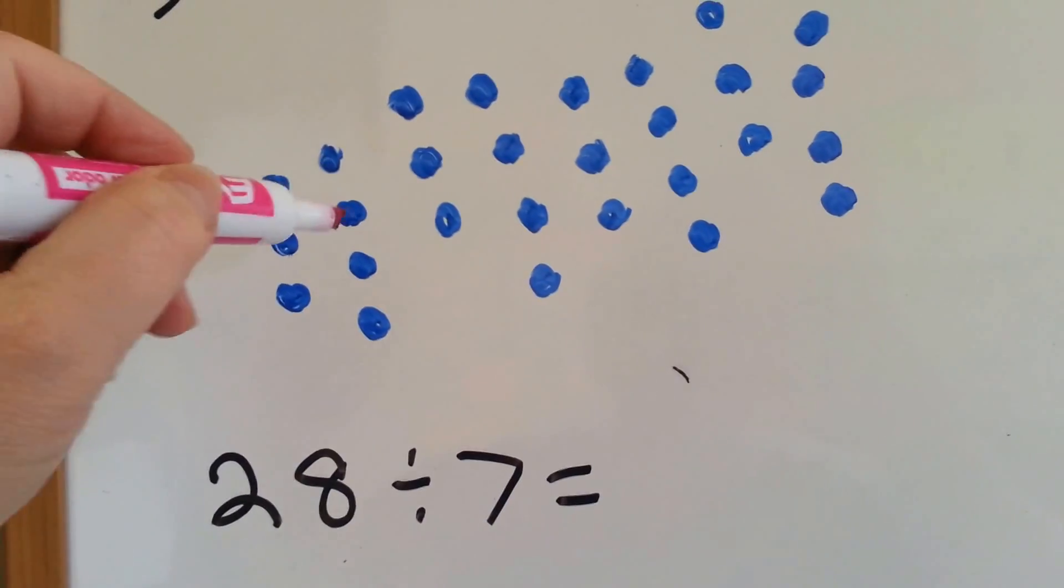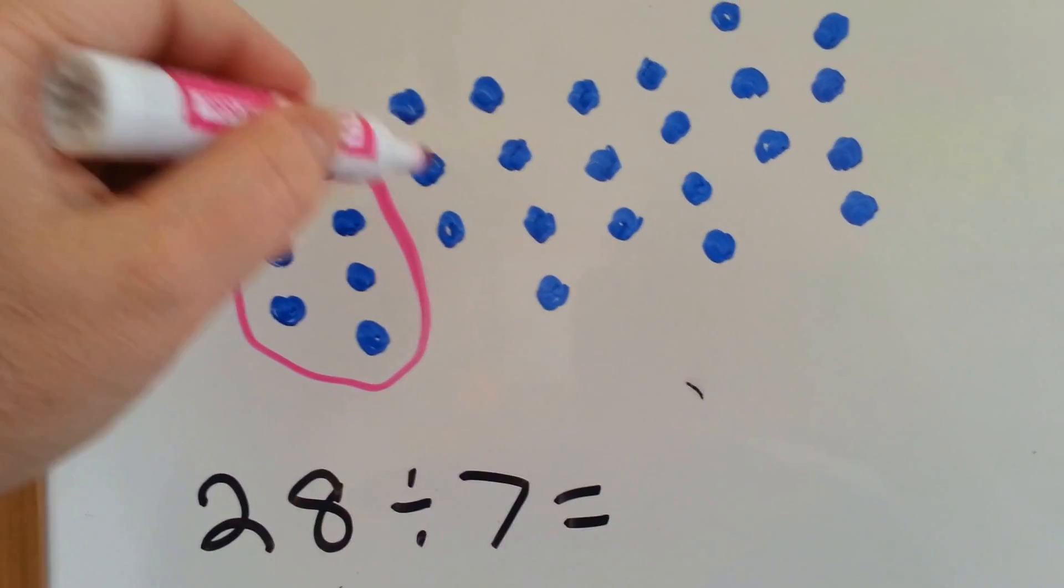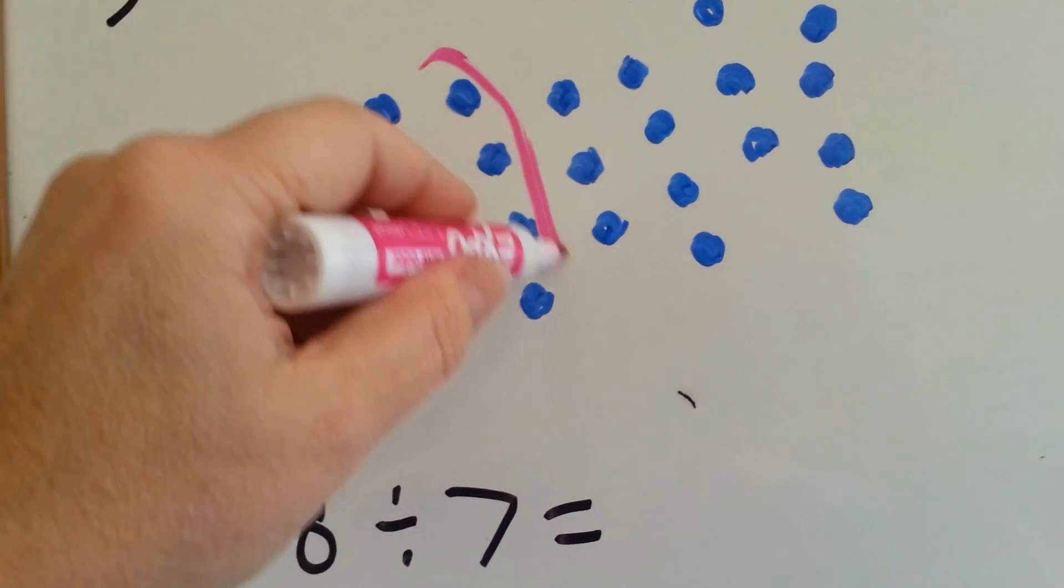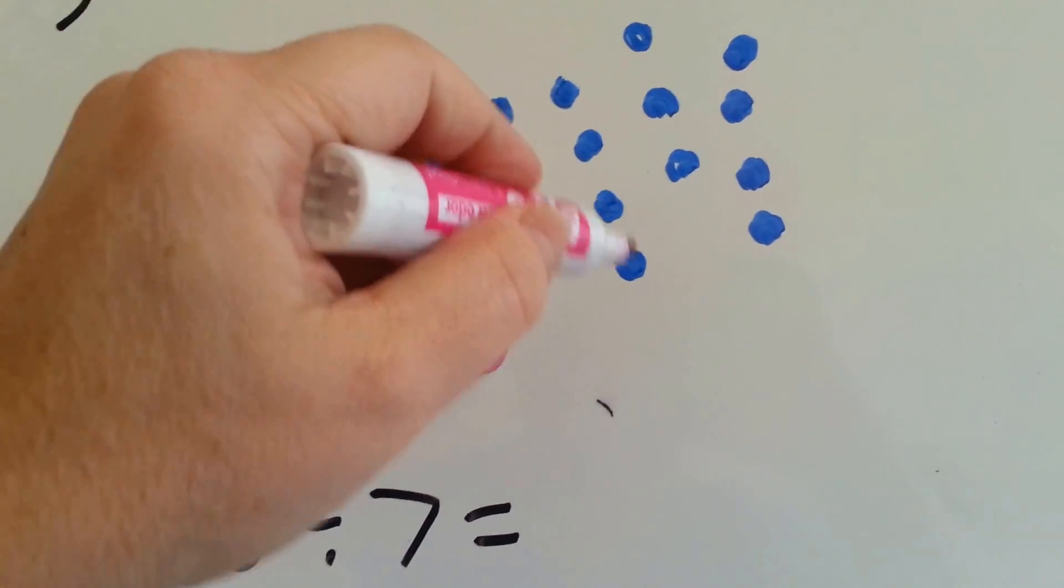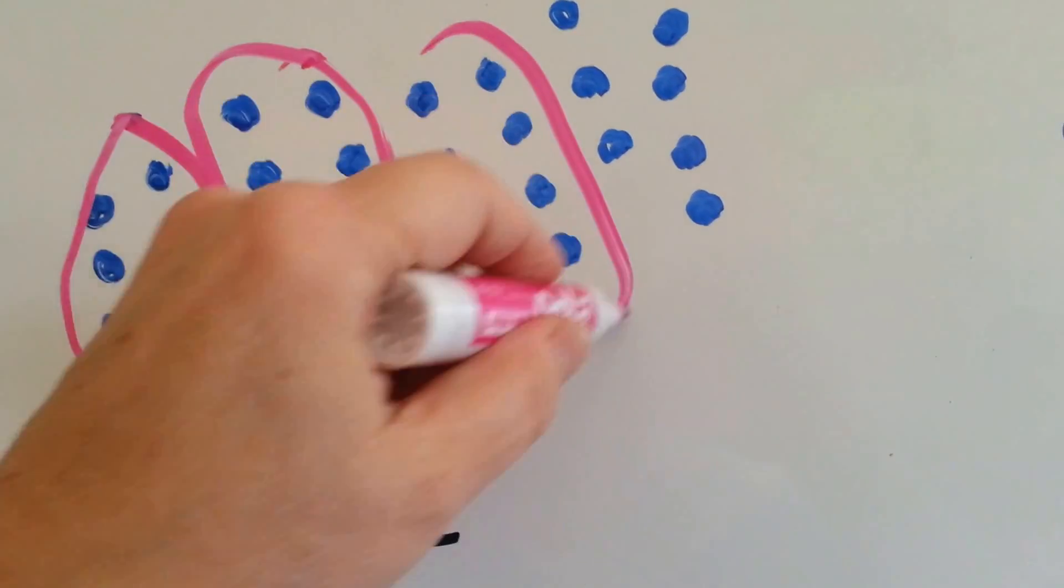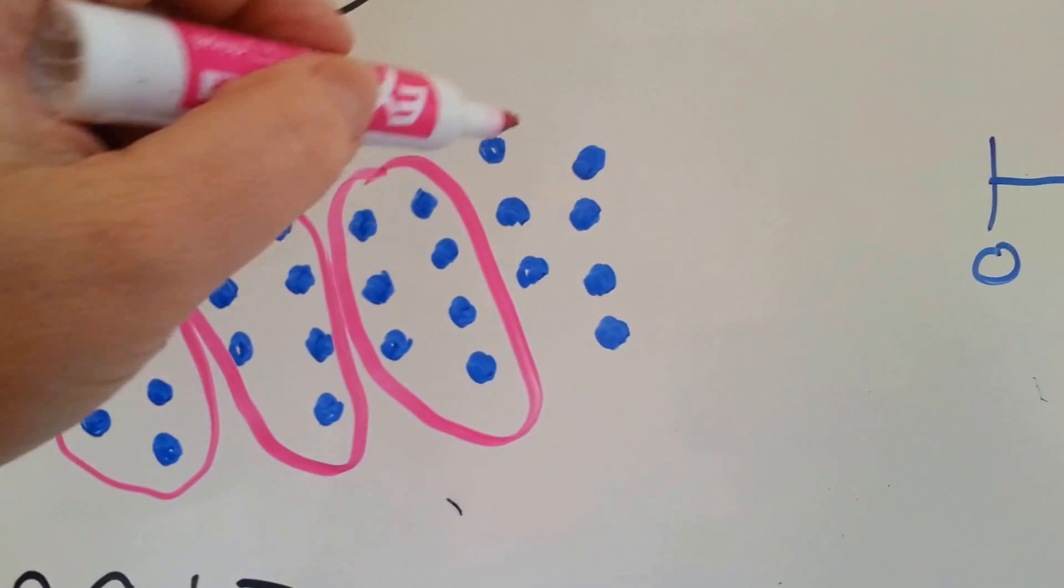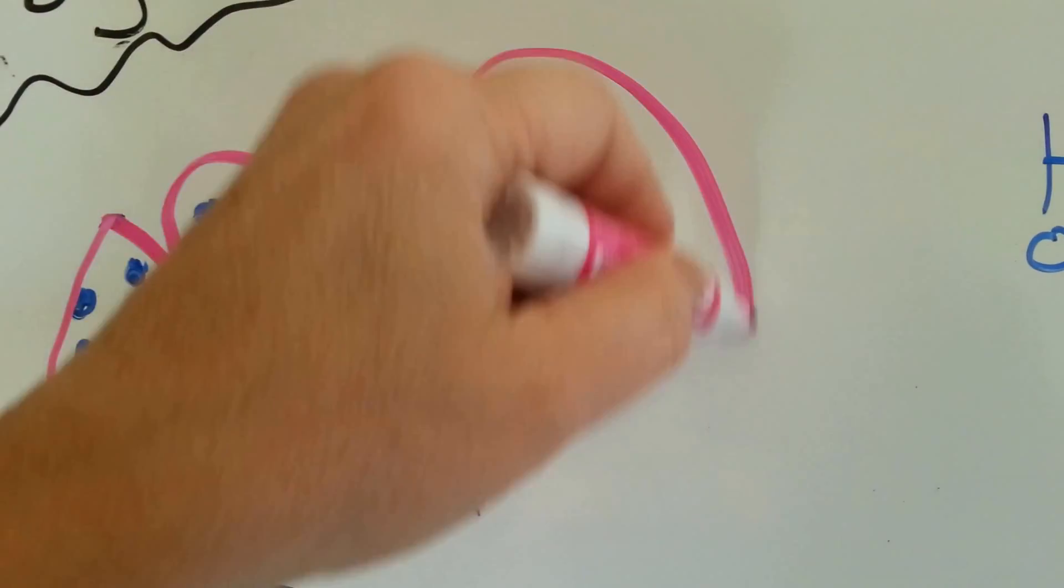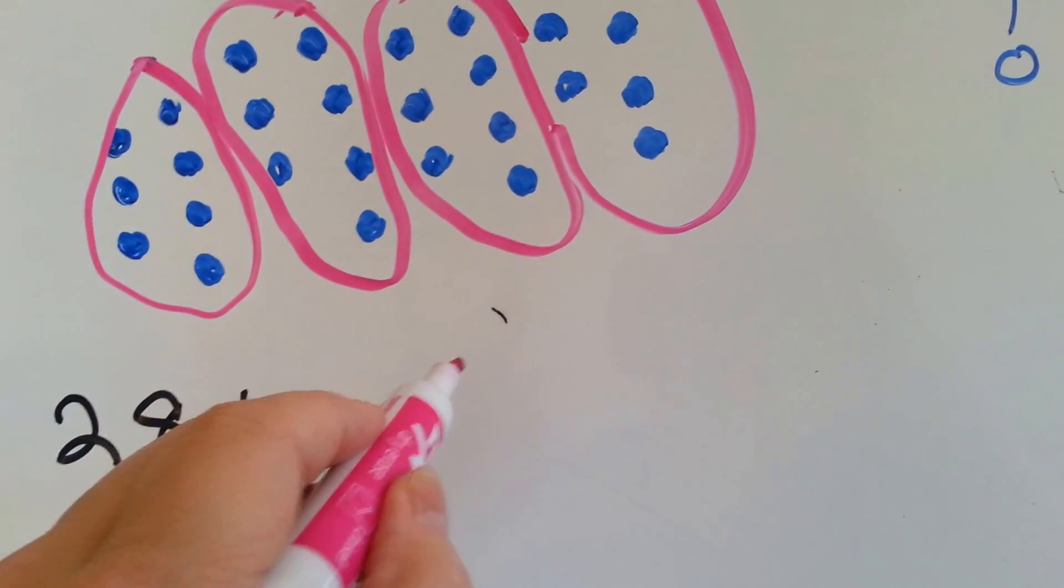1, 2, 3, 4, 5, 6, 7. So there's 1. 1, 2, 3, 4, 5, 6, 7. That's another one. 1, 2, 3, 4, 5, 6, 7. That's another one. You see where this is going? For those of you who are quick-witted. 1, 2, 3, 4, 5, 6, 7. Some of you already know how many groups we have here, don't you? 1, 2, 3, 4. 4 groups.